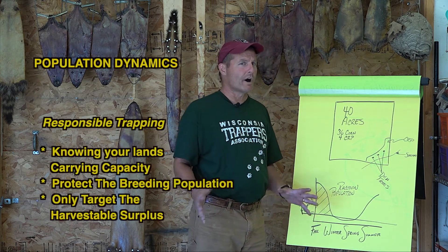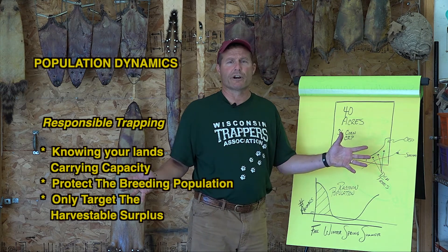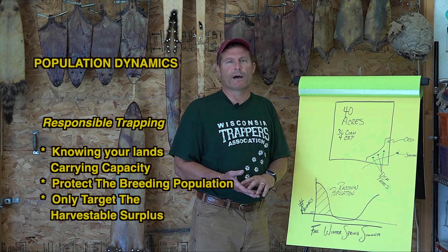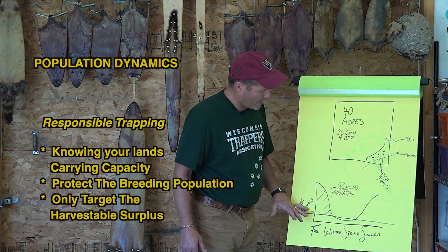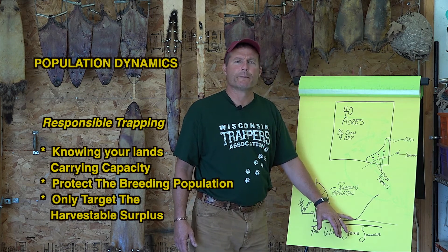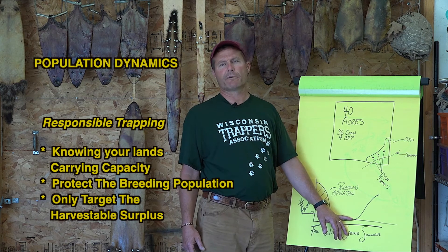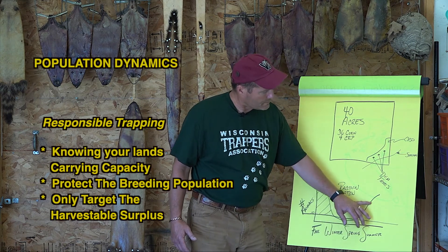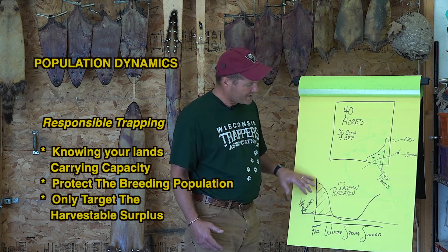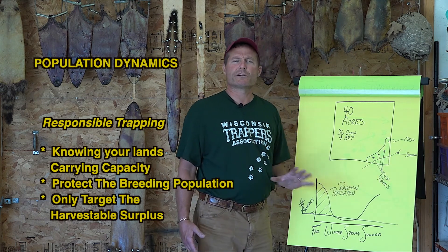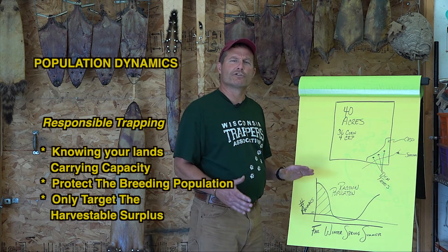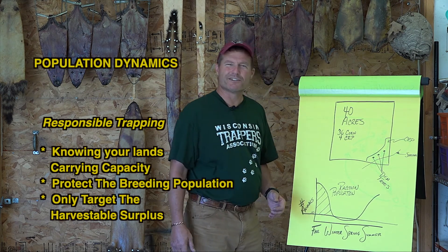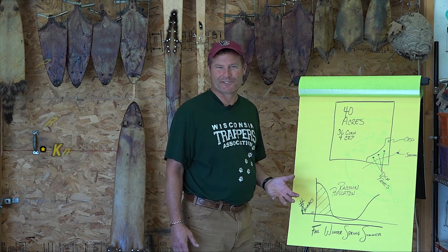Those 20 surplus raccoons are going to go one way or another — they'll disperse to other areas, get hit crossing the road, get diseased, get predated upon, or get trapped. Something will correct the population back down to 10. Then February comes along, and mommy and daddy raccoon have that special raccoon hug. Sixty to sixty-five days later, we've got babies again. As you can see, it's a cyclical curve. As responsible trappers, we don't want to hurt the breeding population — we want to take just the harvestable surplus. Happy trapping.